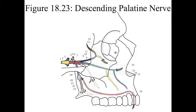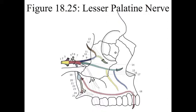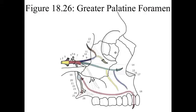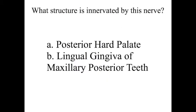Number 23 is the descending palatine nerve — it's about to split into the greater and lesser palatine nerves. Number 24 is the lesser palatine foramen. Number 25 is the lesser palatine nerve. It innervates the soft palate, the palatine tonsils, and the uvula. Number 26 is the greater palatine foramen. Number 27 is the greater palatine nerve. It innervates the posterior portion of the hard palate and the lingual mucosa for the maxillary posterior teeth. The greater palatine nerve can be anesthetized for dental treatment.